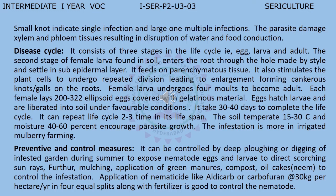The life cycle can repeat 2–3 times in a lifespan. Soil temperature of 15–30°C and soil moisture of about 40–60% encourage parasite growth. The infestation is more in irrigated mulberry farming, so irrigated mulberry farming should be managed carefully. Control measures include deep ploughing or digging of infested gardens during summer season to expose nematode larvae to direct scorching sunlight, mulching and application of green manure, compost and neem oil cake, and application of nematicides like Aldicarb or Carbofuran at 30 kg per hectare per year in 4 equal splits along with fertilizer.